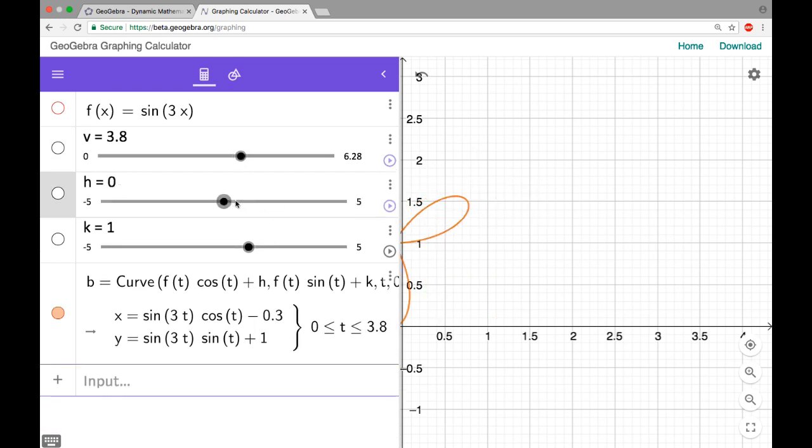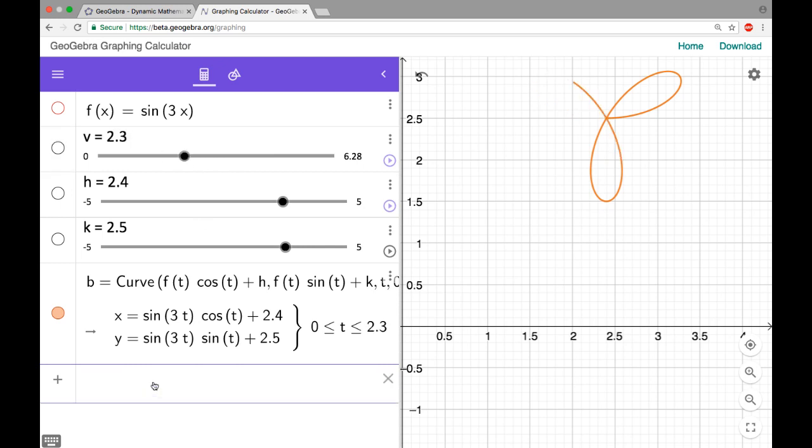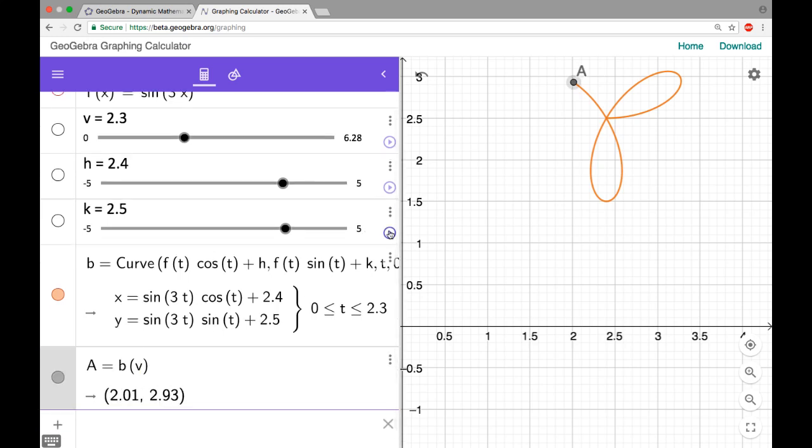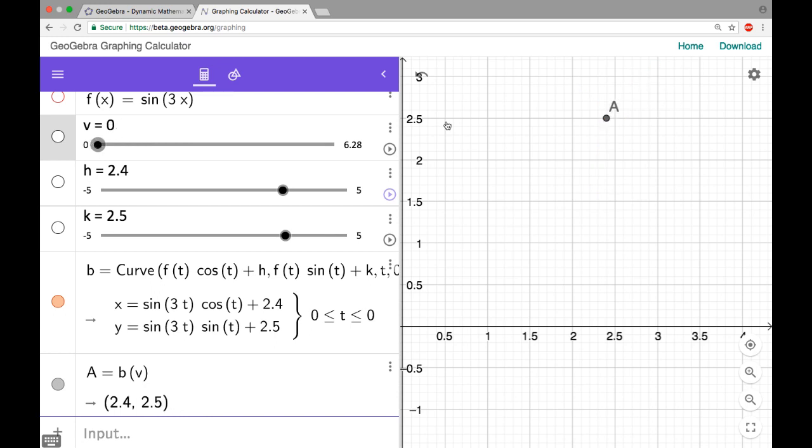So now what I can do is I can move things left and right, move up and down, I can watch it be traced. With the parametrics I can also just put a point on it, I can do b of v, and then if I let this go, I can watch it trace it out, and I can really clearly see the point.